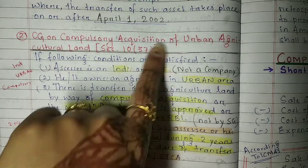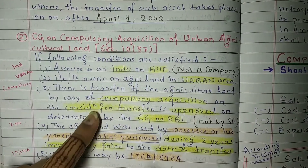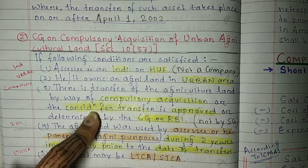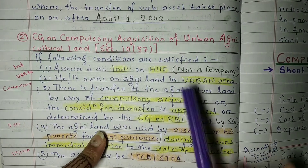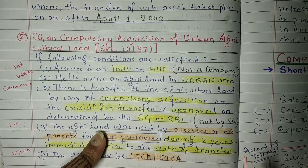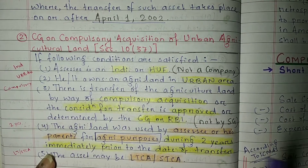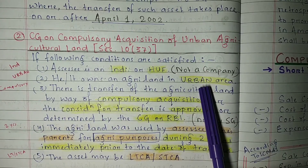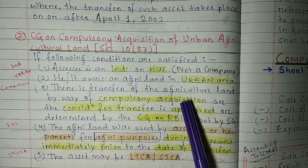Second condition: the individual or HUF must own agricultural land in an urban area. The agricultural land has to be situated in the urban area, not a rural area. Rural agricultural land is not considered a capital asset in the first place, so capital gains tax cannot apply to it — we have studied this earlier.